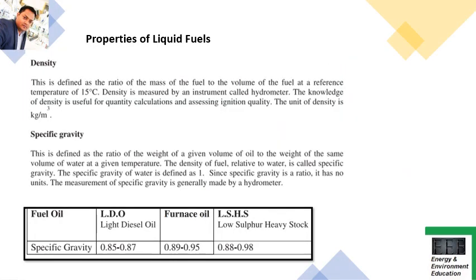Now the properties of liquid fuels — a very important part of the chapter with many potential exam questions. Density is the first property: it is defined as the ratio of mass of the fuel to the volume of the fuel. The reference temperature is 15 degrees centigrade. The instrument used to measure density is a hydrometer, and the unit of density is kg per cubic meter. These four points — definition, reference temperature, instrument, and unit — should be remembered.